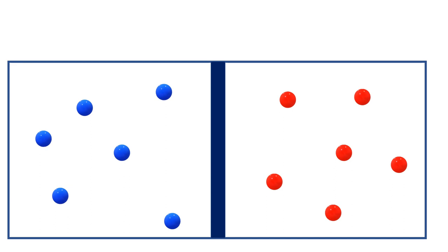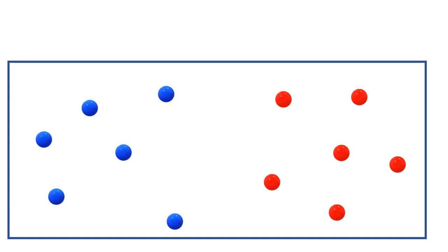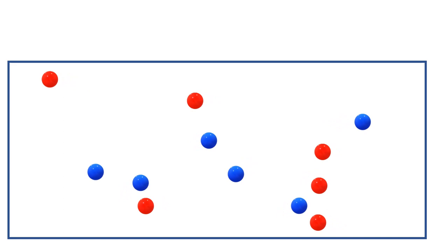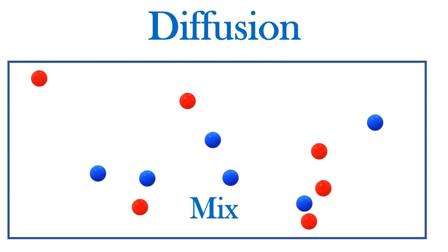Imagine a container with two different gases separated by a divider. Then we remove the divider. The gases are in constant motion, thus will eventually, after some collisions, mix. This is called diffusion.